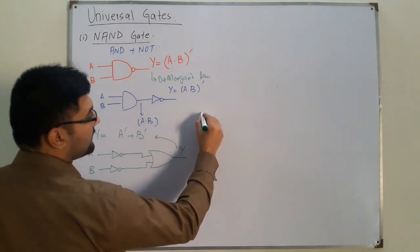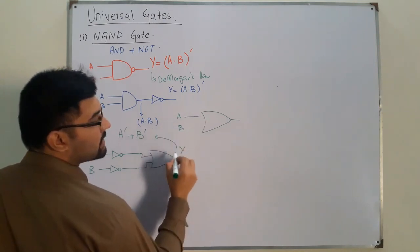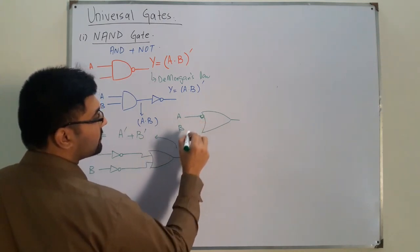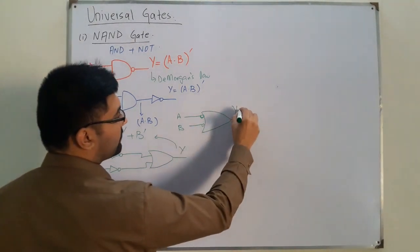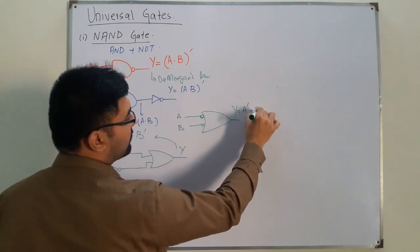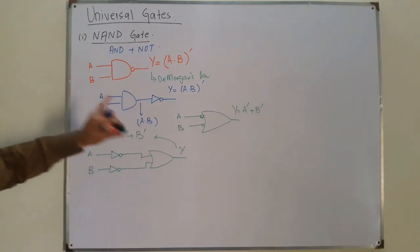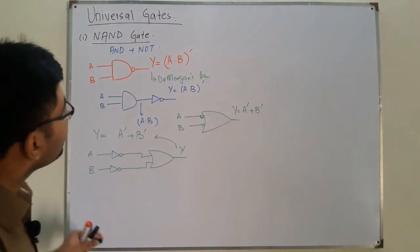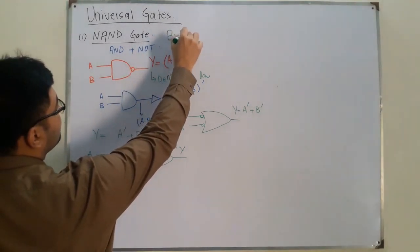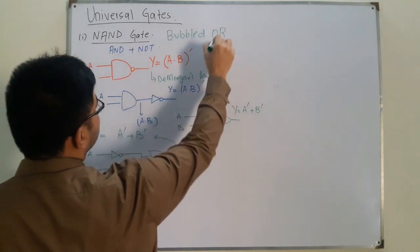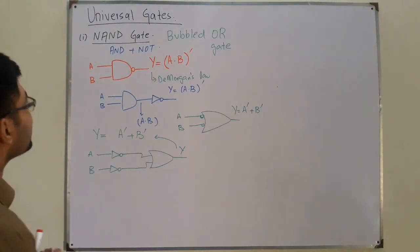This can be drawn as an OR gate with inputs A and B, where you represent the complements by bubbles at the inputs. These bubbles represent the complement state, or the low state, and finally the output Y is A complement OR with B complement. Due to this property, the NAND gate is also called a bubbled OR gate.